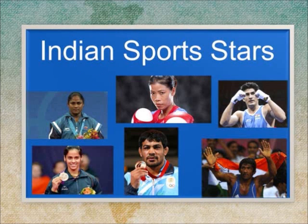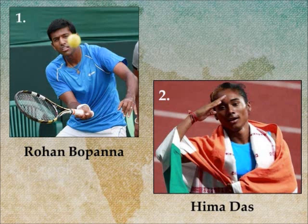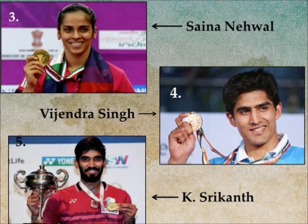Chapter 35: Indian Sports Stars. First, he won the French Open Mixed Doubles in 2017 and Men's Doubles gold at the 2018 Asian Games. The name of the sports star is Rohan Bopanna. Second, nicknamed the Ding Express, she is one of India's top young sprinters. The name of the sports star is Hima Das. Next, she was the first Indian to win the World Junior Badminton Championship. The name of the sports star is Saina Nehwal.